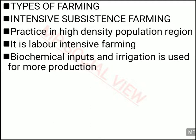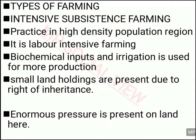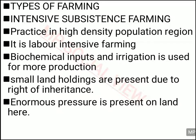Next we are going to study about the second type of farming, that is intensive subsistence farming. It is actually done in areas where the population density is very high. It is a labor-intensive farming method, and we use some biochemical fertilizers, inputs and irrigation facilities to increase production to some extent. But it still has the problem of small land holdings, basically because of the right of inheritance. When a father divides his land among his sons, the size of land holding decreases. This actually puts a lot of pressure on the land for production.